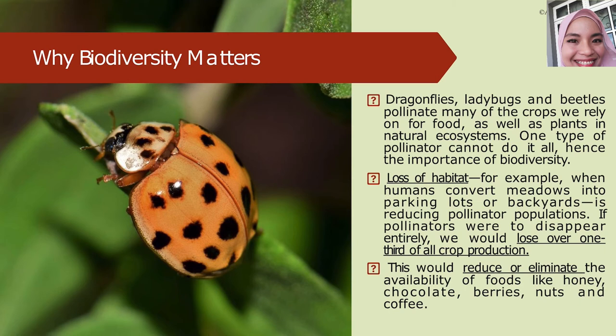For example, when humans convert meadows — grassy areas — into parking lots or backyards, it reduces the pollinator population. Once you've cleared and cemented a grassy area, the ladybugs and beetles are gone and can no longer pollinate. The pollination process and pollinator population are then affected. If pollinators were to disappear entirely, we would lose over one third of our crop production.